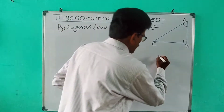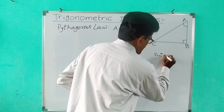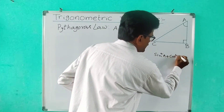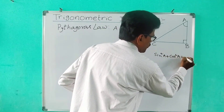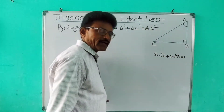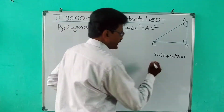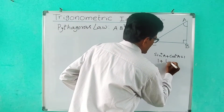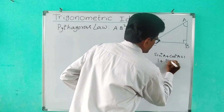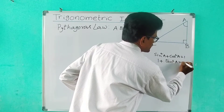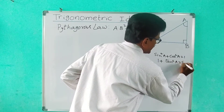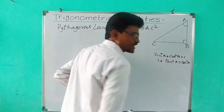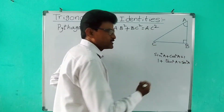So we have proved sin²A + cos²A = 1. Now there are two more important identities: 1 + tan²A = sec²A, and 1 + cot²A = cosec²A.